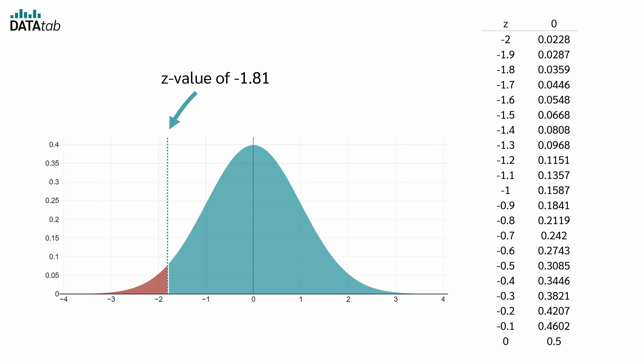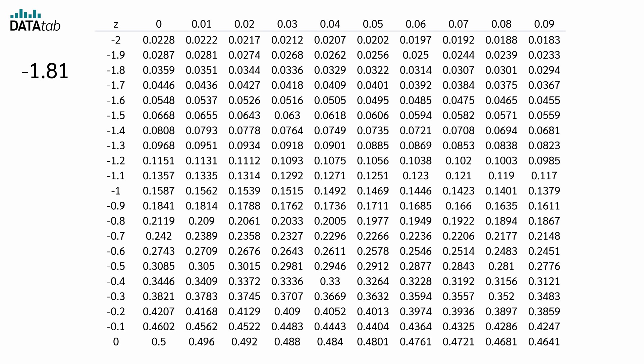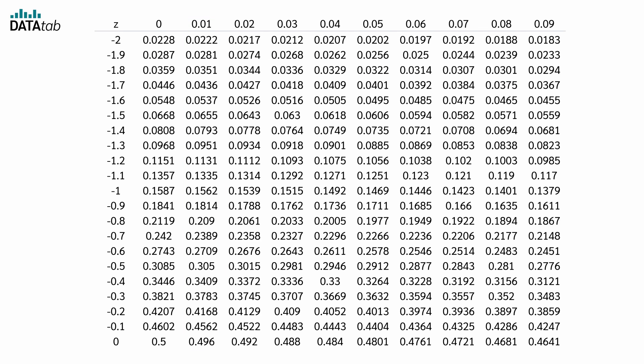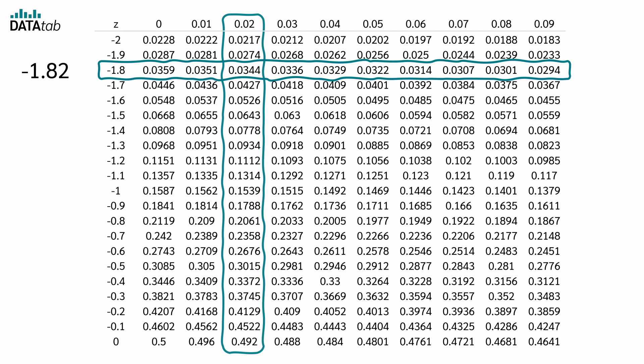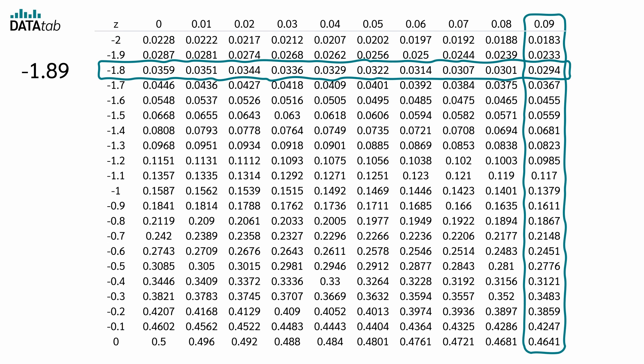But what happens if we want to read a z-value of minus 1.81 in the table? We now need the other columns for this. For example, we can read a z-value of minus 1.81 at minus 1.8 and at 0.01. We could read a z-value of minus 1.82 at minus 1.8 and 0.02, up to a z-value of minus 1.89 at minus 1.8 and 0.09.